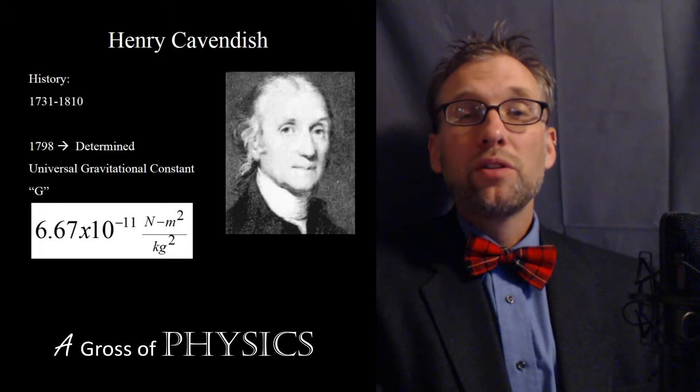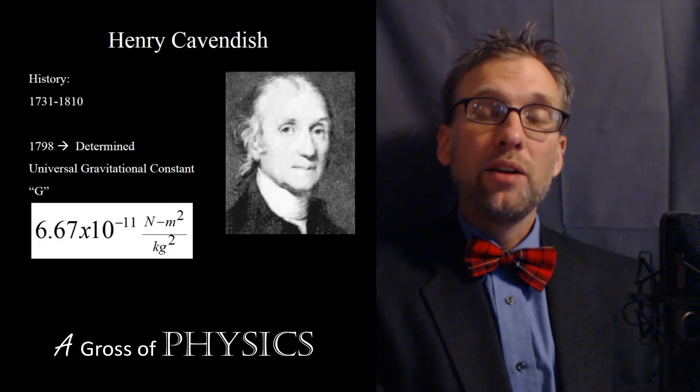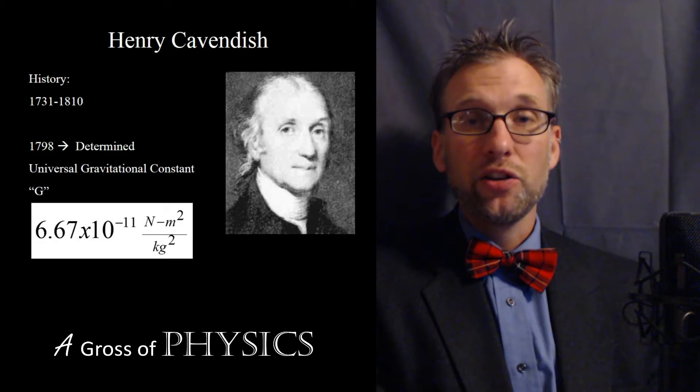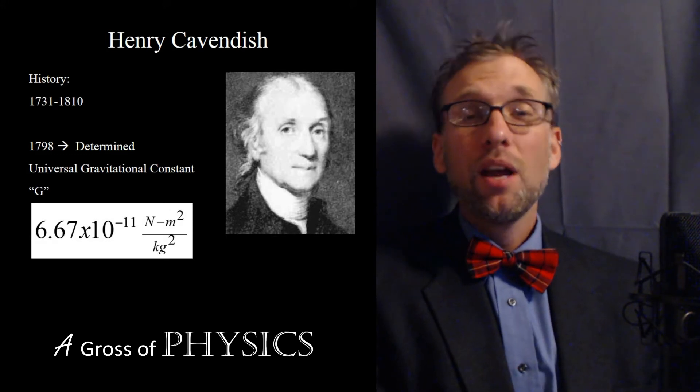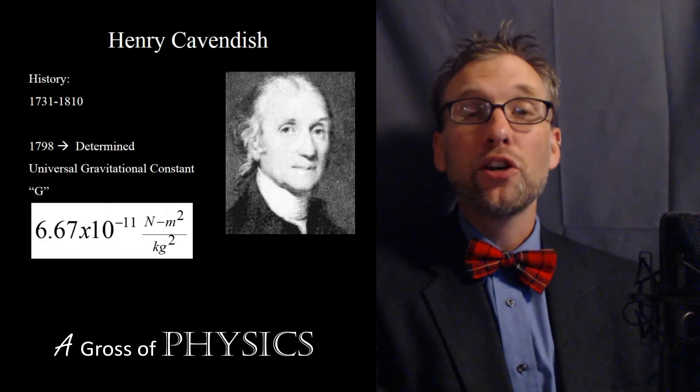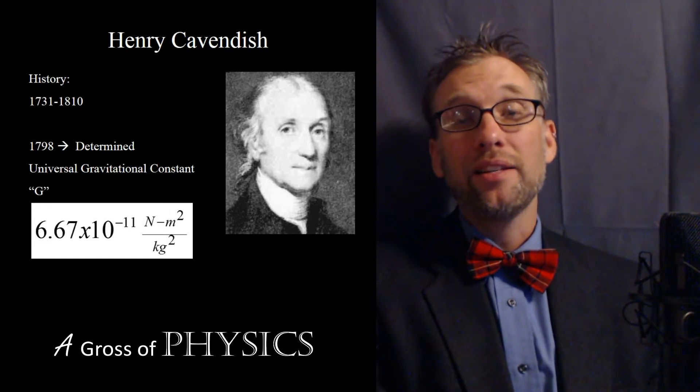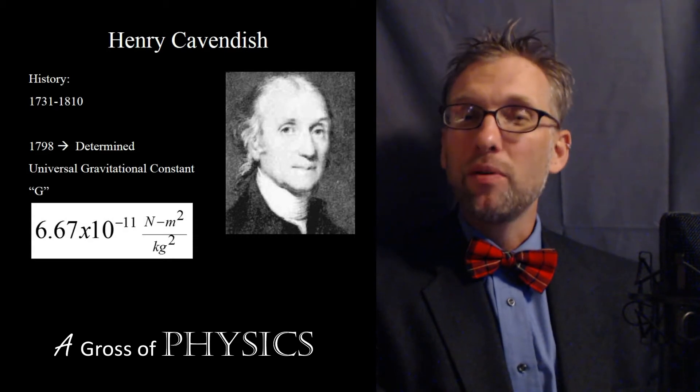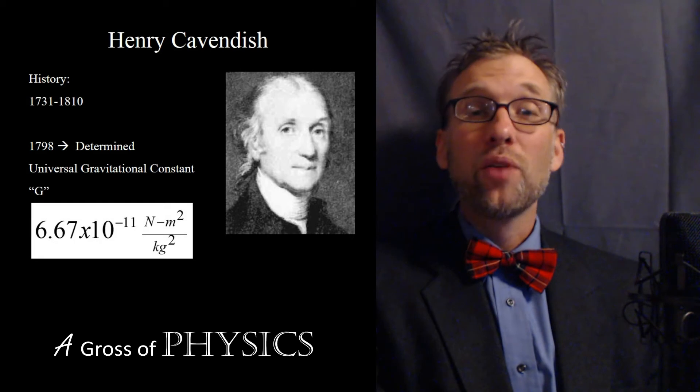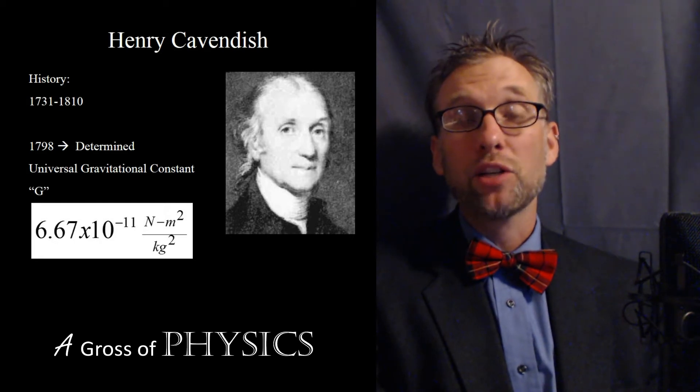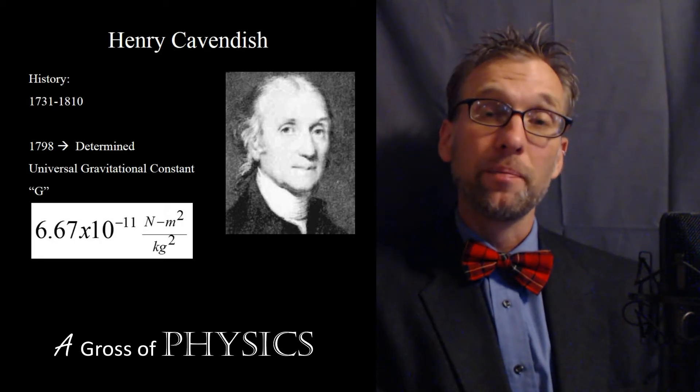When we had Newton's law of universal gravitation, it was not actually an equal sign, it was proportionality because Newton was never able to determine the constant that related the masses and the distances between them. Remember the masses were a direct relationship and the radii or the distance between the objects was an indirect square relationship.